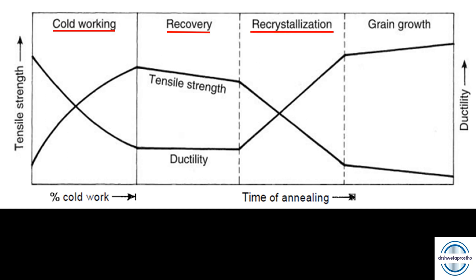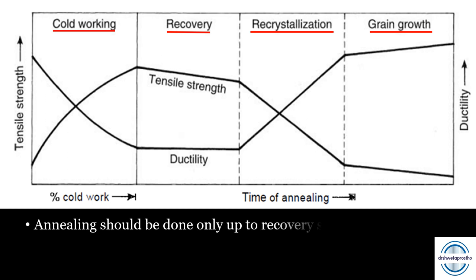Second is recrystallization. On further heating, changes in microstructure occur; the deformed grains begin to recrystallize. The metal regains its old soft and ductile condition and loses its properties of resilience, so the recrystallization stage is avoided. Third is grain growth: the recrystallized grains continue to grow into larger grains, leading to a coarse grain structure, with no significant difference in ductility and tensile strength. We conclude that annealing should be done only up to the recovery stage, as uncontrolled heating can result in unintended, undesirable structural changes.